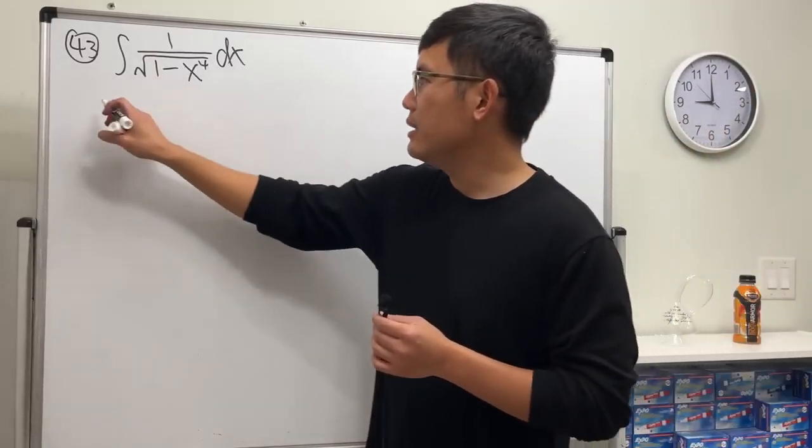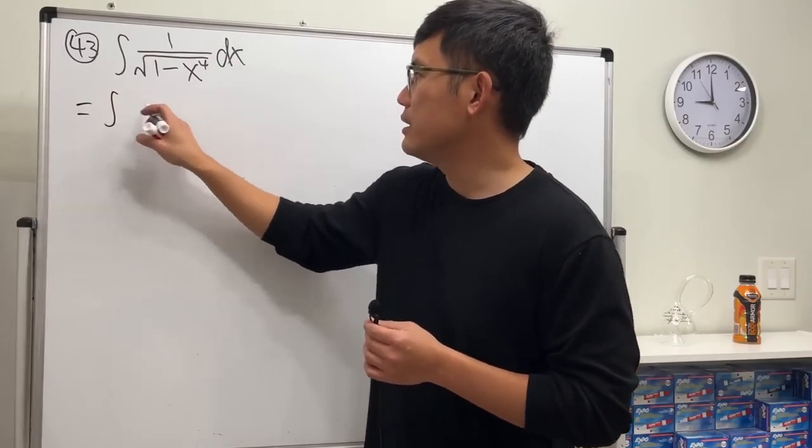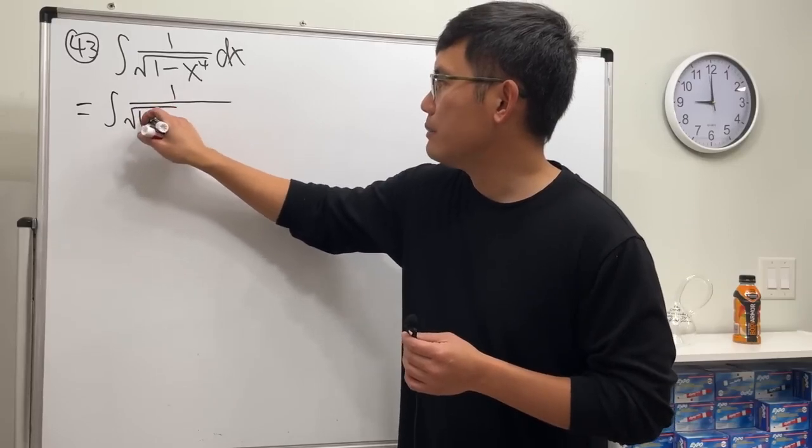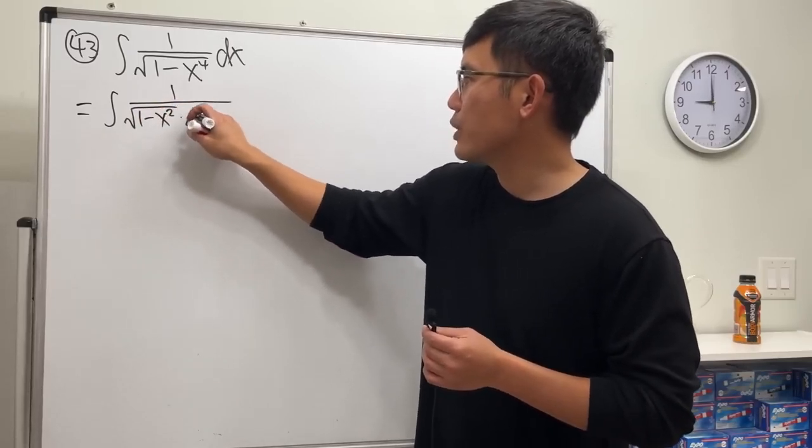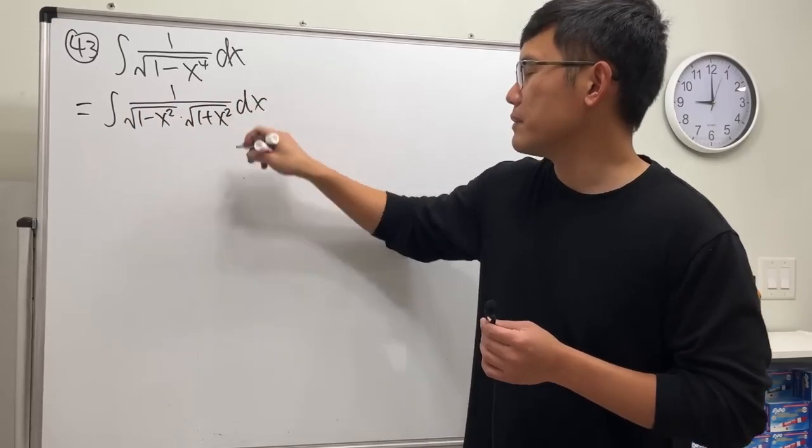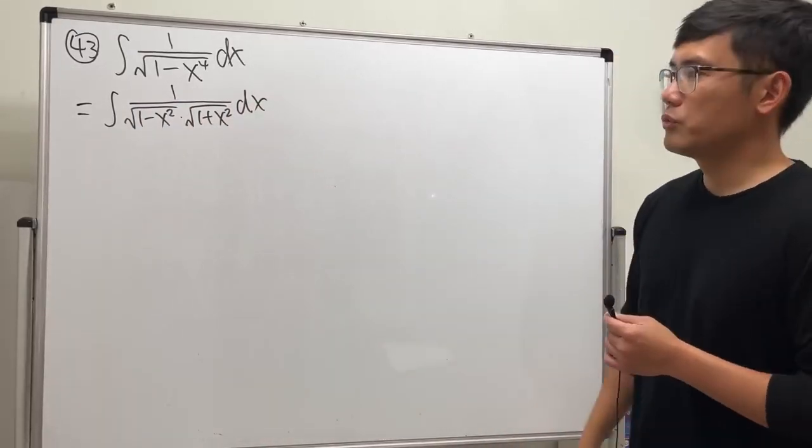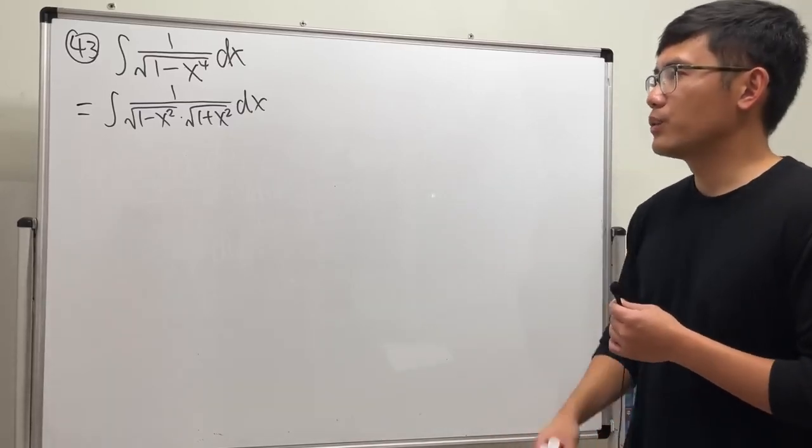We can look at this as the integral of 1 over square root of (1 minus x squared) times square root of (1 plus x squared), assuming they're on the common domain. Right. Good, but then what do we do next though?